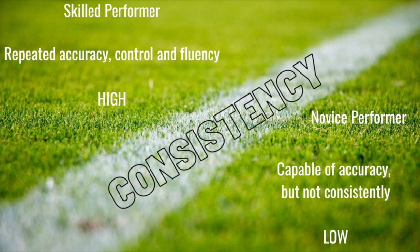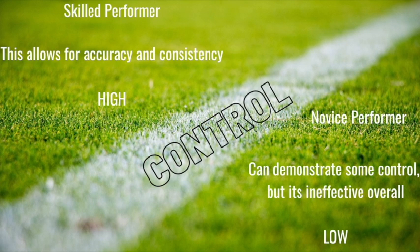Next, we've got control. No surprises — a skilled performer has very high control, which allows for accuracy and consistency. Control and precision are the two reasons that allow for accuracy and consistency. A novice performer has low or ineffective control overall, which lowers the consistency and accuracy of the performer.